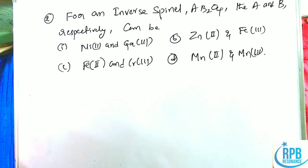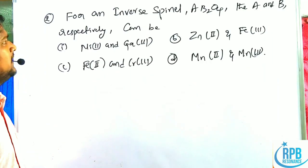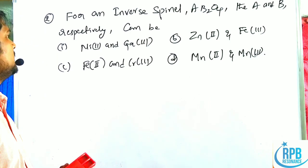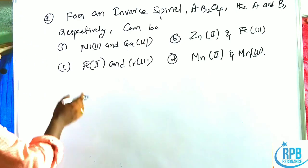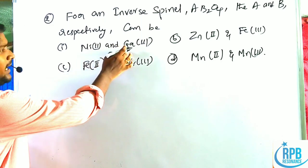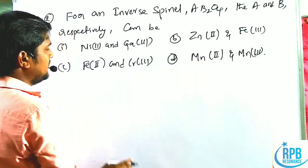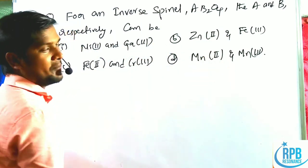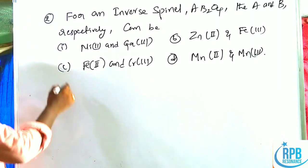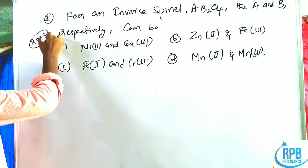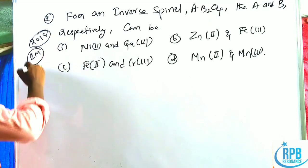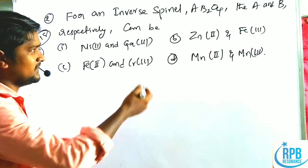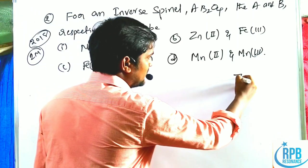Now for the second problem: for an inverse spinel AB₂O₄, A and B respectively can be either Ni²⁺/Ga³⁺, Zn²⁺/Fe³⁺, Fe²⁺/Cr³⁺, or Mn²⁺/Mn³⁺. This question came from the 2018 GATE, also as a two-marker.